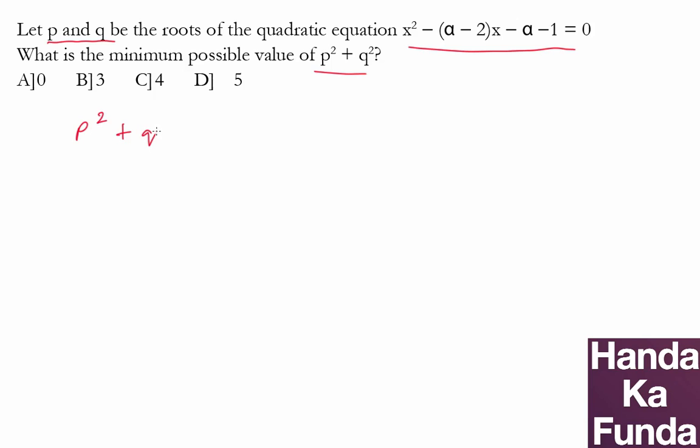Now first of all, what is P square plus Q square? P square plus Q square is P plus Q whole square minus 2PQ.